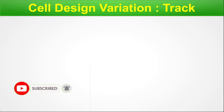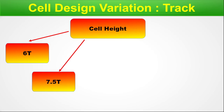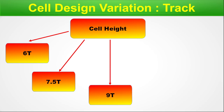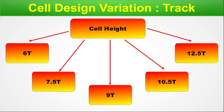The next type of variation is track, which is nothing but the standard cell height. The more the number of tracks, the larger the height and consequently the area of the standard cell. Typical variations include: 6T (smallest area), 7.5T, 9T, 10.5T, and 12.5T (maximum height shown). In actual design there can be more variation upward or downward specific to your standard cell. Track variation controls the cell area — cell area increases or decreases with track number.